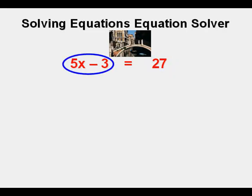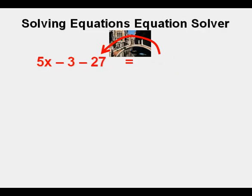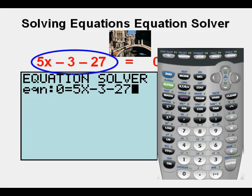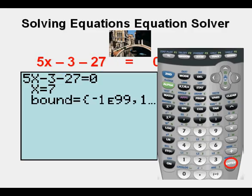Let's move the 27 over the bridge to have the right side equal to zero. On the left side of the bridge, the 27 changes to minus 27, or negative 27. We have nothing left on the right side, so we put in zero. Now our equation is calculator ready. We enter the left side of the equation, then use equation solver by pressing the alpha key, then the enter key that has the green solve above it.